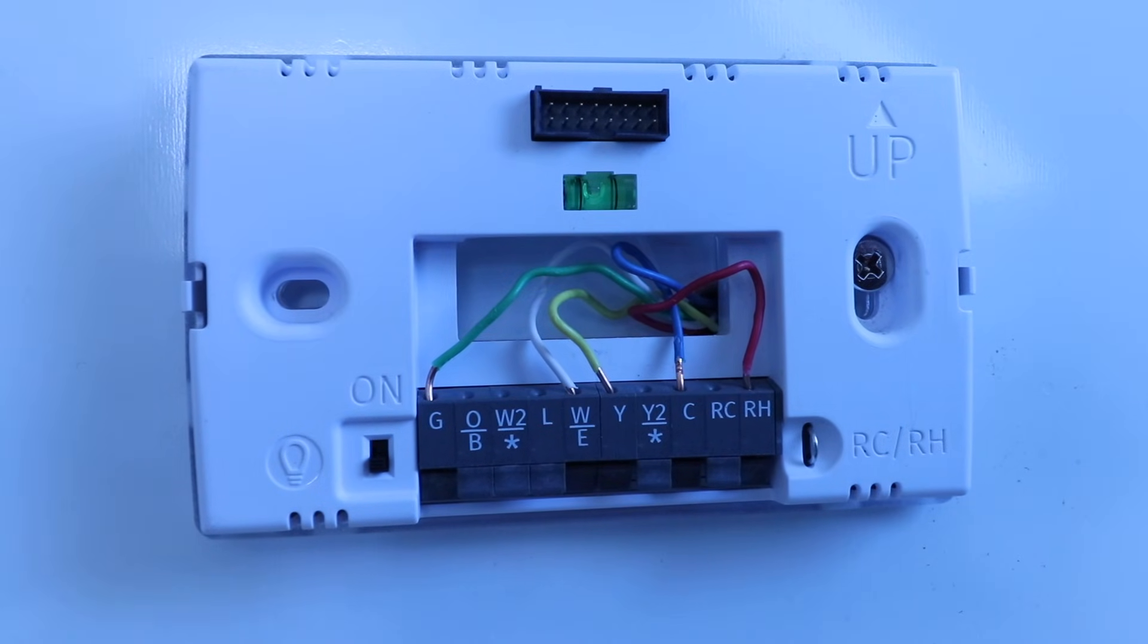Now the only downside to that is that you do have to install that C wire adapter down inside your existing HVAC system. And it typically does take four wires.